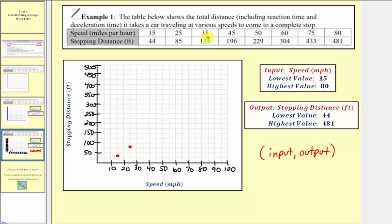The next ordered pair is 35 comma 135. So the input is 35, the output is 135. That would be below 150, somewhere in here. The next ordered pair is 45 comma 196. Here's an input of 45 and output of 196 is just below 200, let's say here.